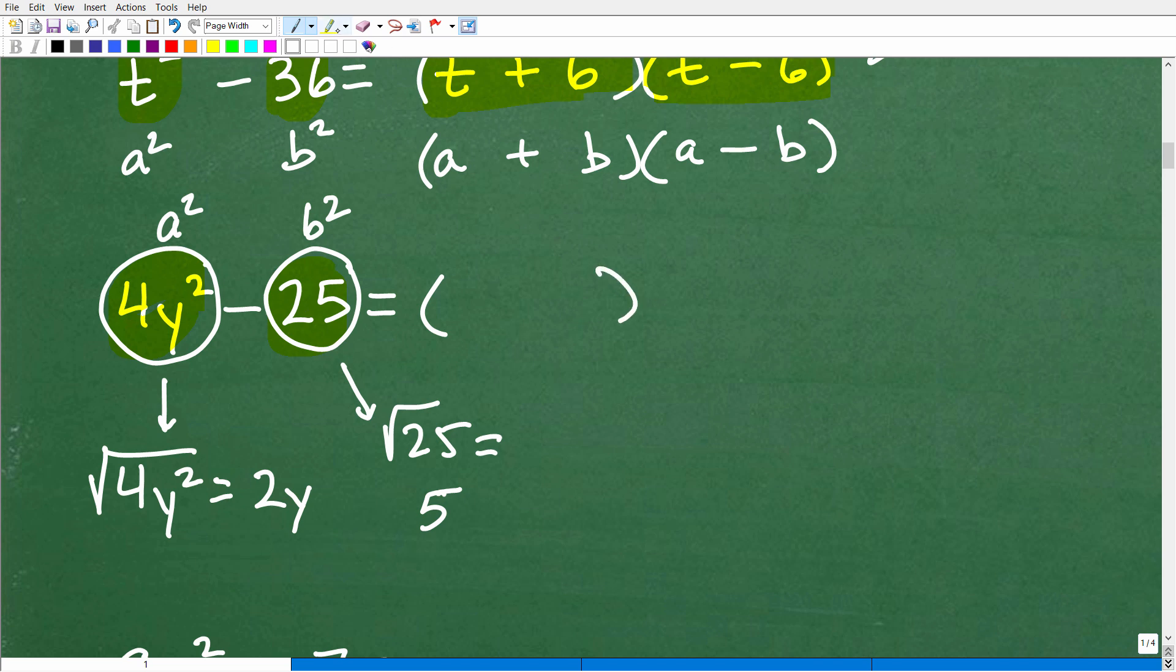So now we can kind of put this together. I want a plus b, okay, a plus b down here. So this is like my a and this is my b, okay? So this would be 2y plus 5 times 2y minus 5, okay? So this is our a plus b times a minus b, okay?